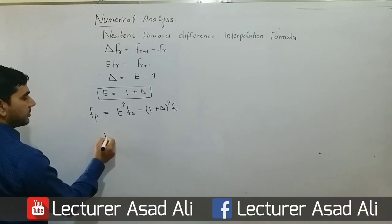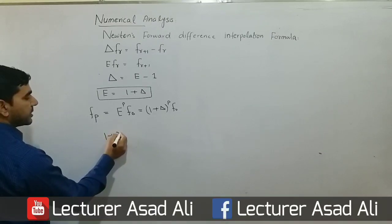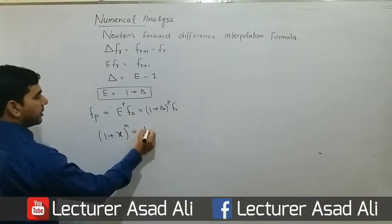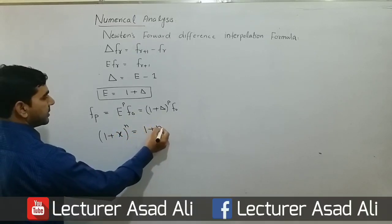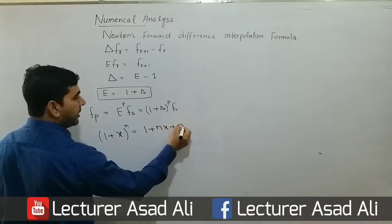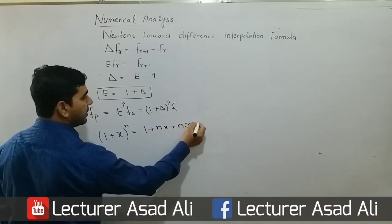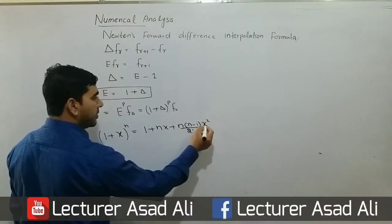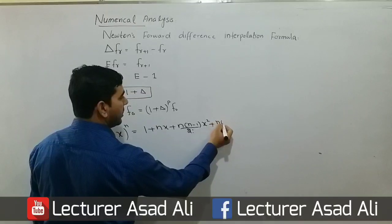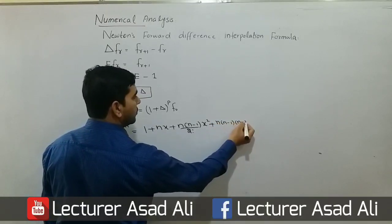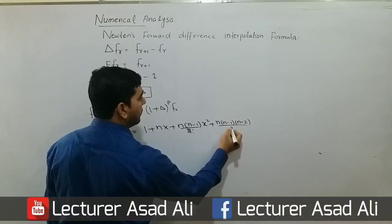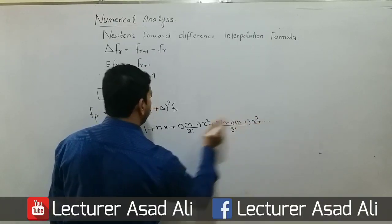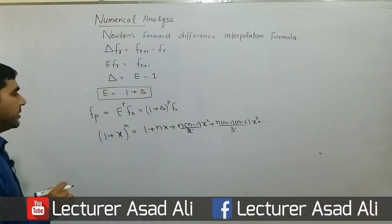The binomial series states that (1 + x)^n = 1 + nx + [n(n-1)/2!] x² + [n(n-1)(n-2)/3!] x³ + ... and so on. This is the binomial series.